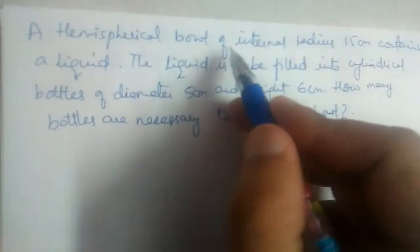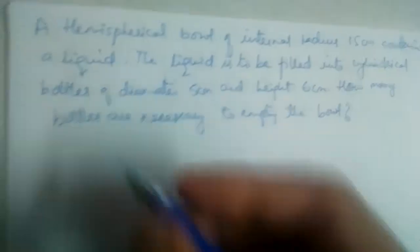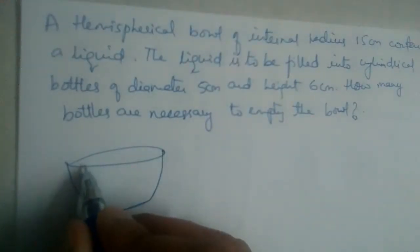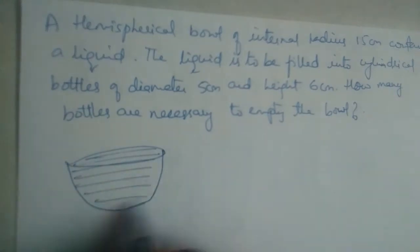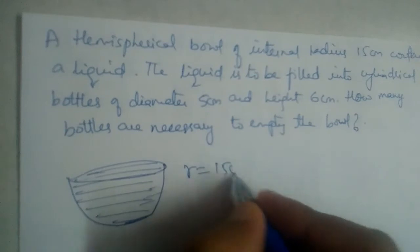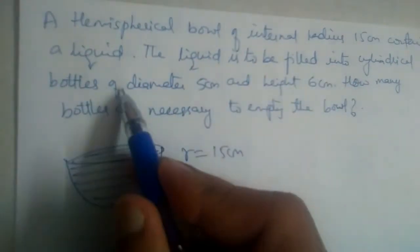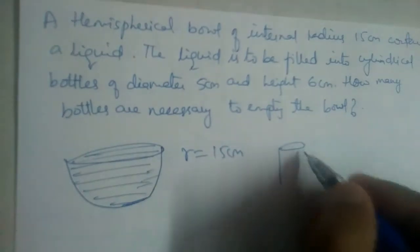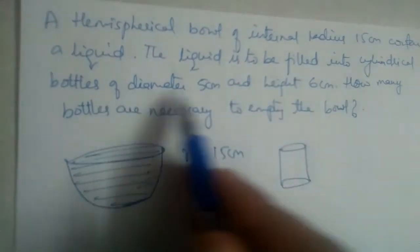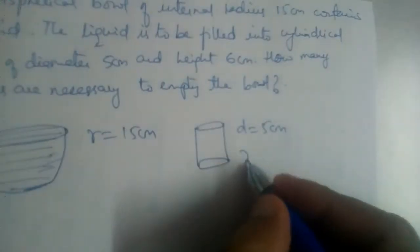A hemispherical bowl of internal radius 15 centimeters contains a liquid. We have a bowl that contains some liquid with a radius of 15 centimeters. The liquid is to be filled into cylindrical bottles of diameter 5 centimeters.